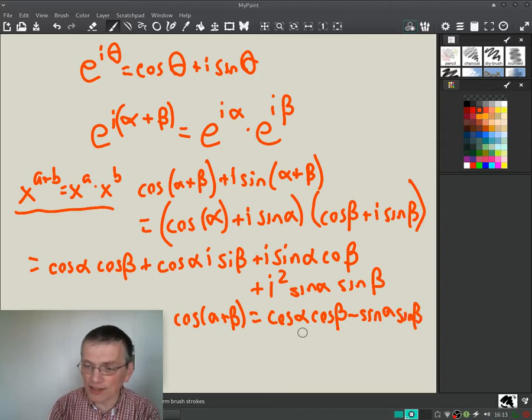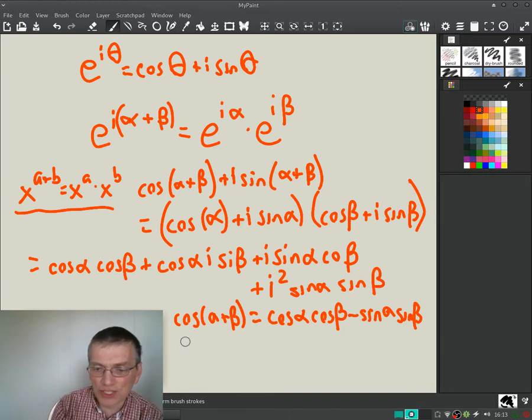Look at that! There it is. There is the sum angle formula coming out of the Euler formula. Pretty neat. We don't have to do any involved geometry. This works for any angle. There's no restrictions we made on it has to be first quadrant or anything.